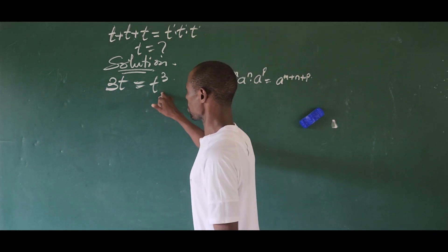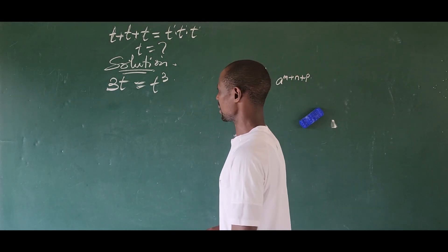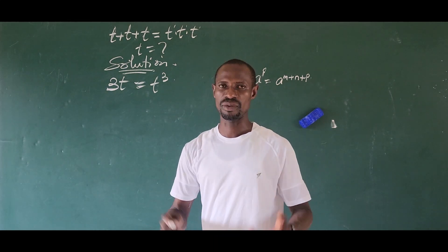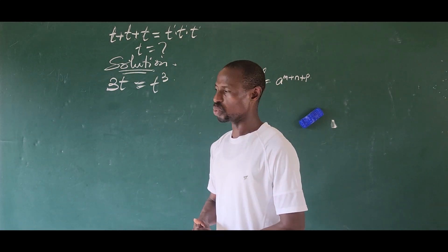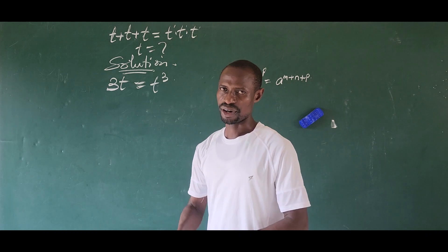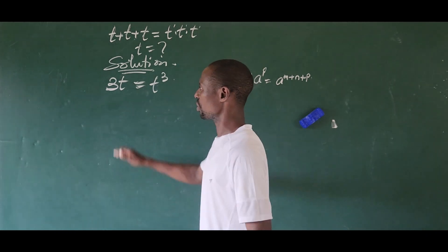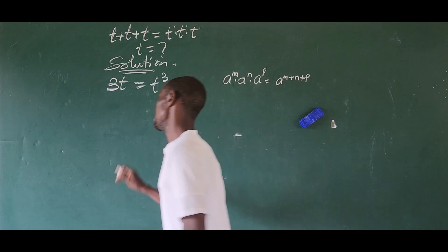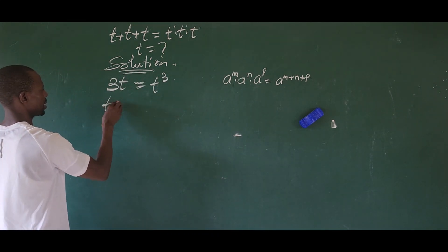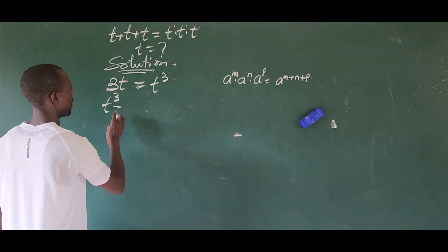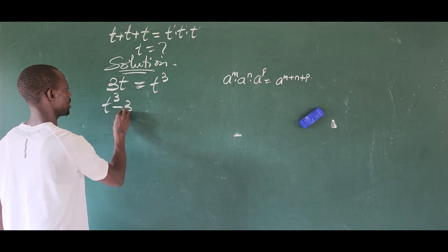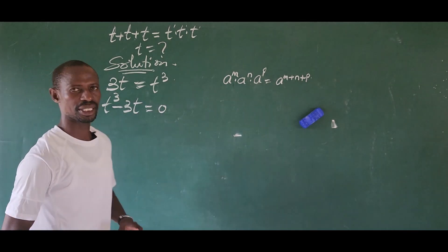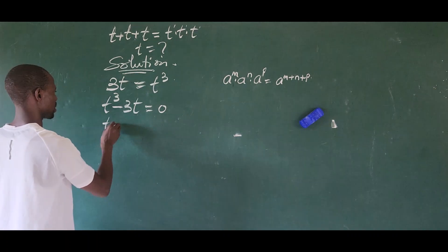So this is a third-degree polynomial equation. We have to solve for three values of t. Let's move t cubed to this side of the equation and rearrange, giving us t to the power of three minus three t equals zero.